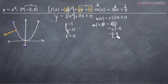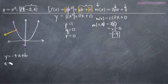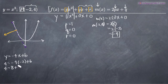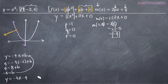Now we can use the slope and the point (-2, 4) to write the equation of the tangent line in slope-intercept form. We write y equals negative 4x plus b, then plug in the point: 4 equals negative 4 times negative 2 plus b, which gives 4 equals 8 plus b. Subtracting 8 from both sides, b equals negative 4. So the tangent line is y equals negative 4x minus 4.